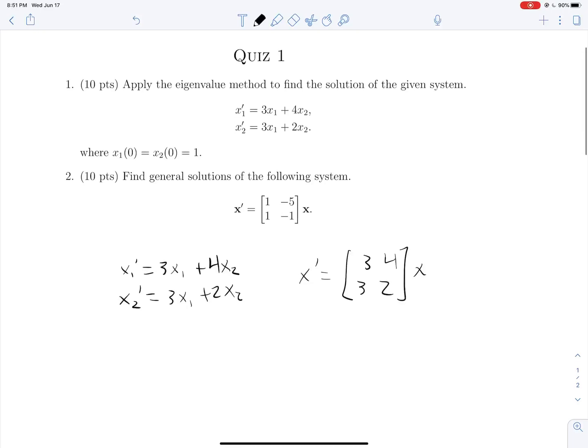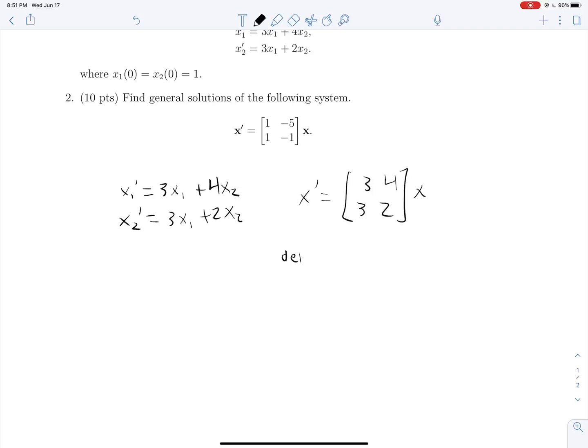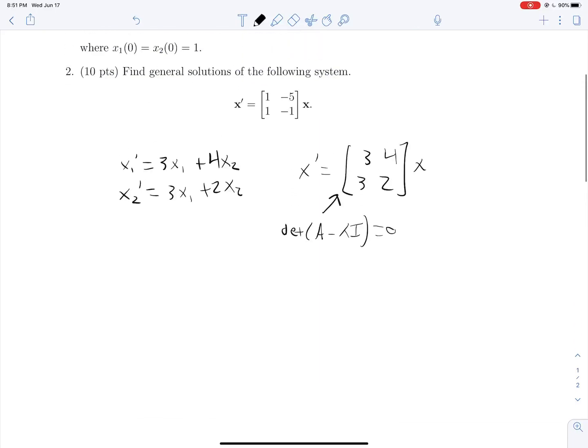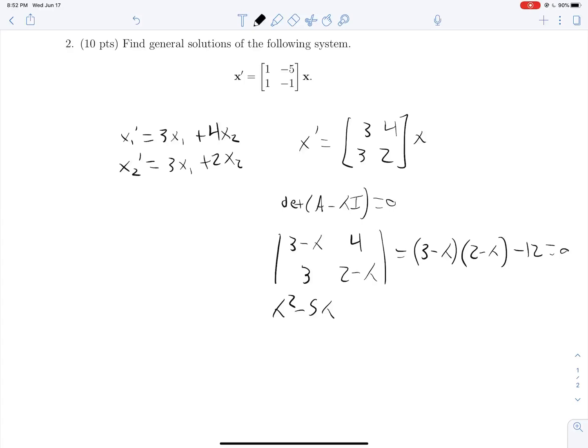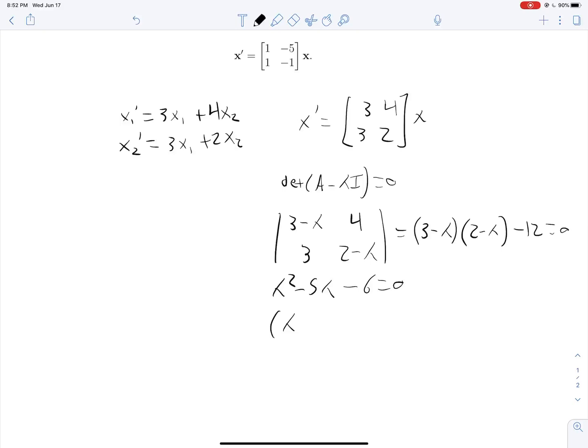So we need some eigenvalues before we can do anything else. So we're solving the determinant of a minus lambda i is equal to 0. We're solving for those lambdas where this is our coefficient matrix a. So we're finding the determinant of 3 minus lambda, 4, 3, 2 minus lambda. This gives us 3 minus lambda times 2 minus lambda minus 12 is equal to 0. Or lambda squared minus 5 lambda minus 6 is equal to 0. Factoring this, we get lambda minus 6 lambda plus 1 is equal to 0. And so we get lambda is equal to 6 and negative 1.